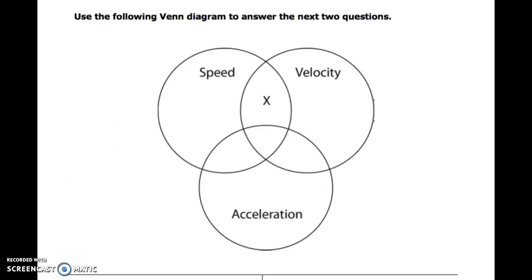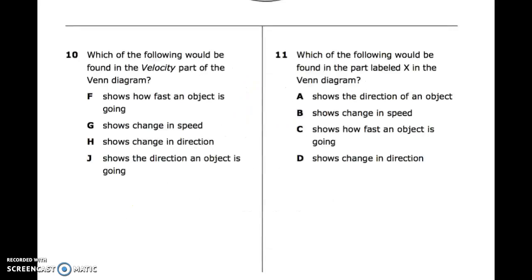Use the following Venn diagram to answer the next two questions: speed, velocity, acceleration. What do they all have in common right here in the X between speed and velocity? Number ten: which of the following would be found in the velocity part of the Venn diagram? F: showing how fast an object is going. G: shows change in speed. H: shows change in direction. J: shows the direction an object is going.